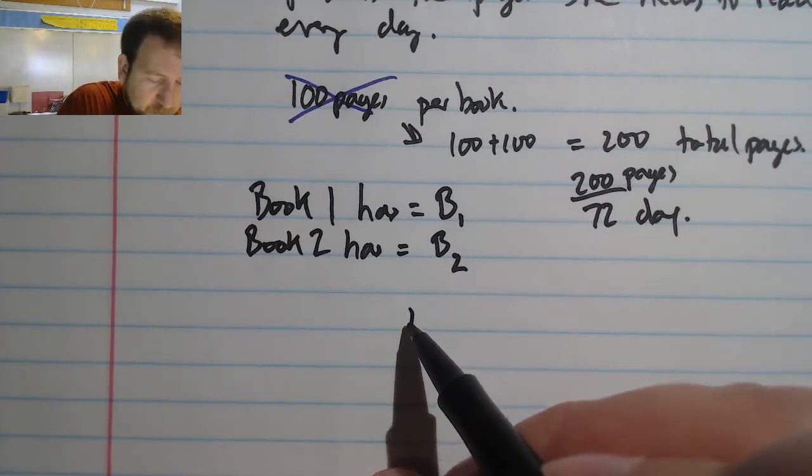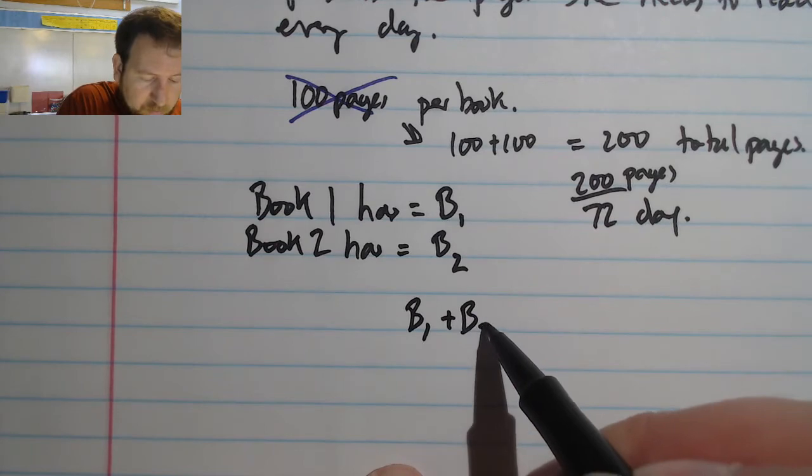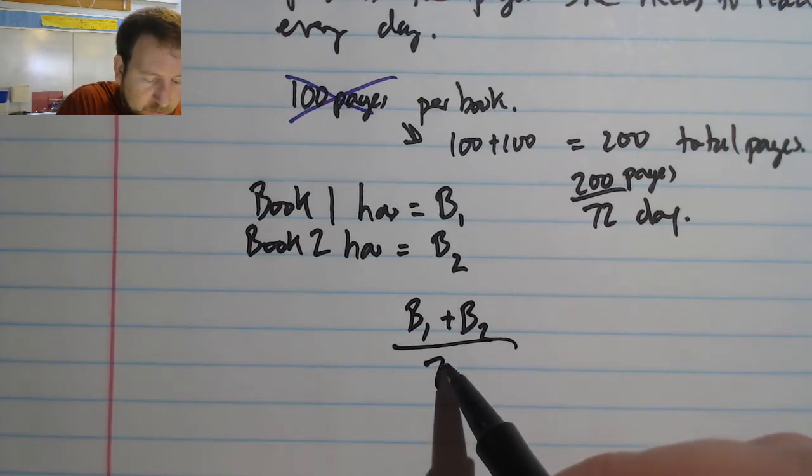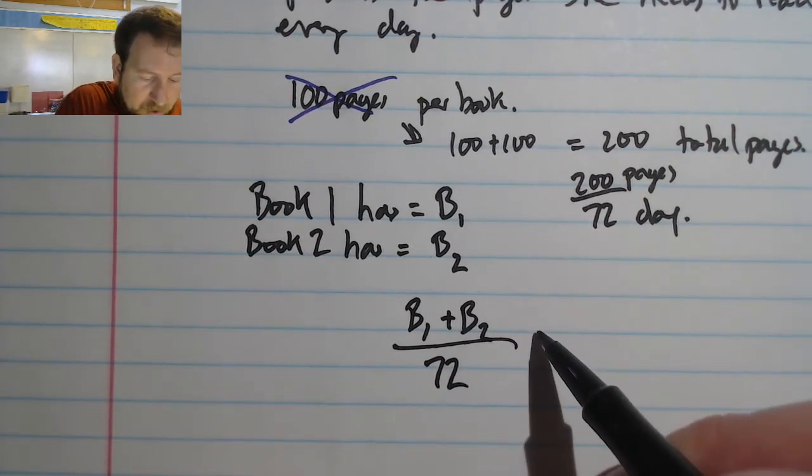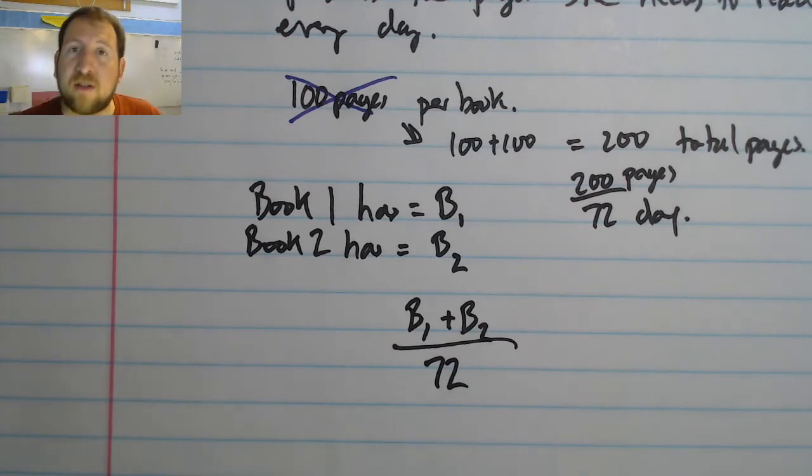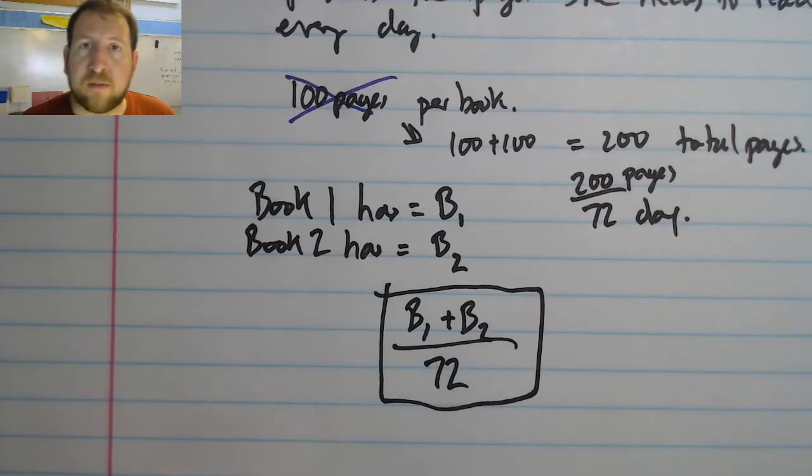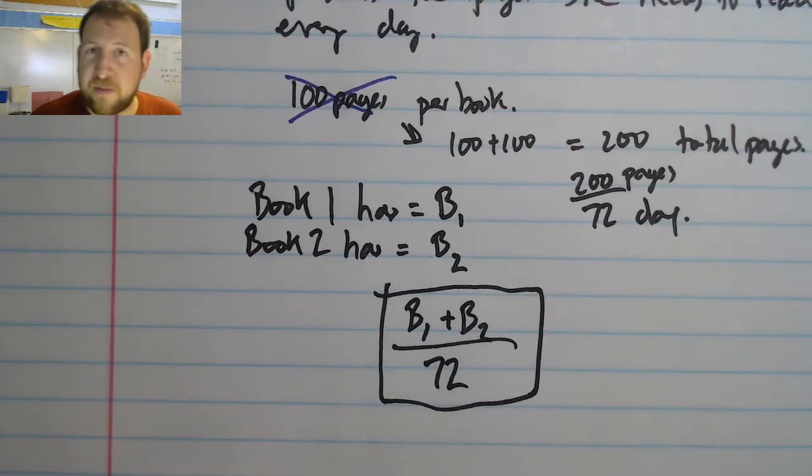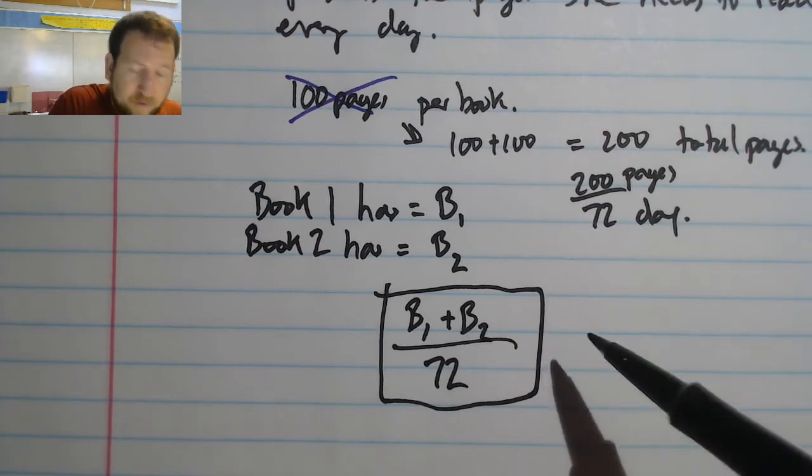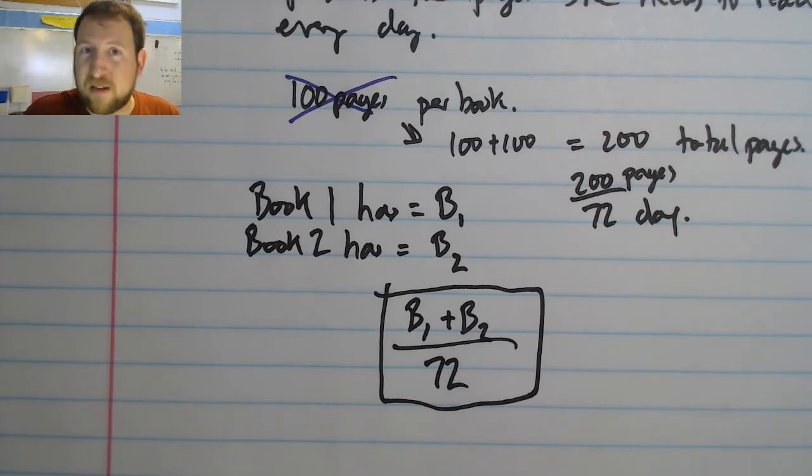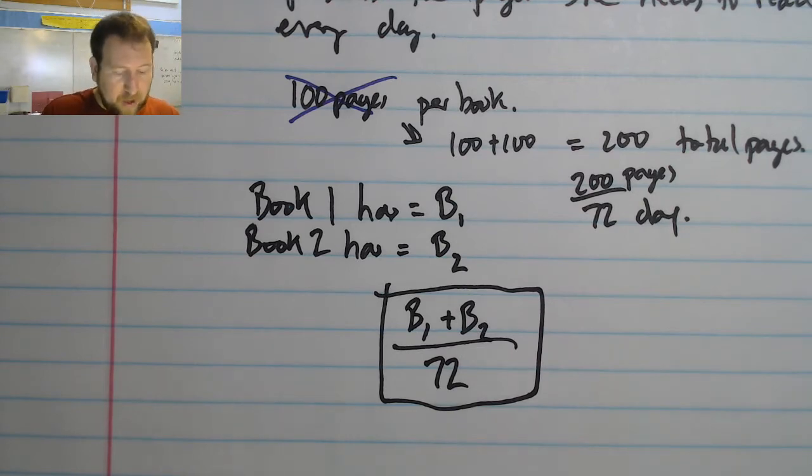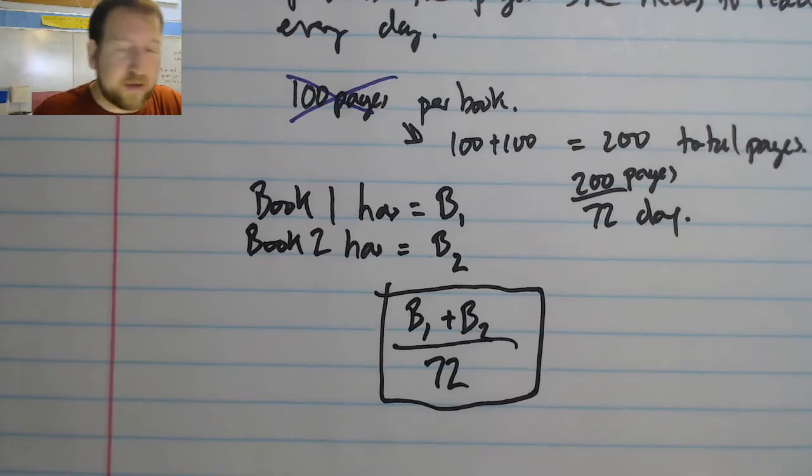And I can do exactly what I just did. I can say, well, if I knew the total number of pages, I can just divide it by the days. I can say (book 1 + book 2) / 72, and that is going to give me the number of pages that she needs to read every day. Without knowing the number of pages in book 1 and book 2, this is simplified and this is the variable expression that I need. Now what these are handy for is that later if I do find out the number of pages in book 1 and book 2, I can easily plug it in and evaluate, just like I was doing before. This is what we're going to be doing in this chapter. Let's take a look at another example.